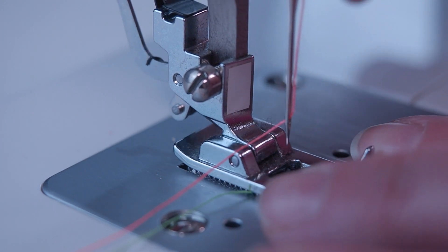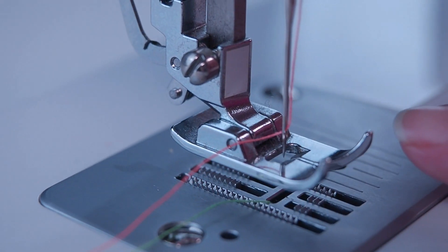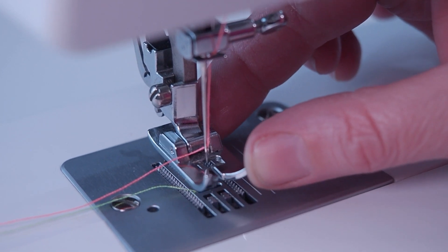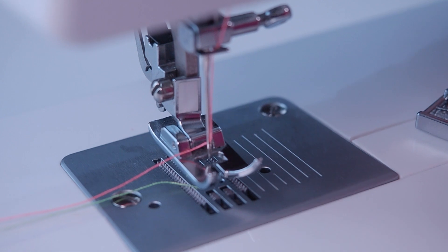If it's in the right position, it's going to grab the new presser foot and lift it up. If you wiggle your sewing foot and it stays attached to the machine, it's securely in place ready for you to start sewing.